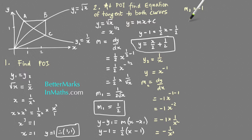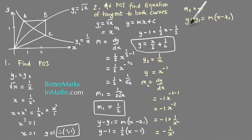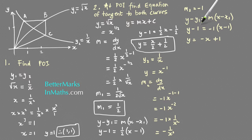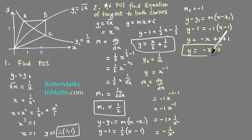Using y minus y1 equals m(x minus x1) again with point (1, 1) and m2 = minus 1: y minus 1 equals minus 1 times (x minus 1). Expanding: minus x plus 1, then adding 1 to both sides gives y equals minus x plus 2. That's the equation of the second tangent.